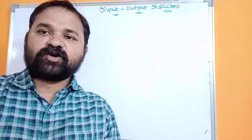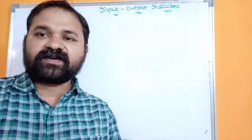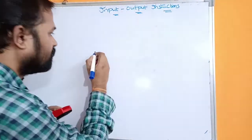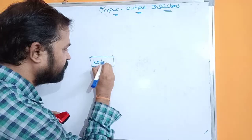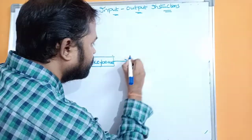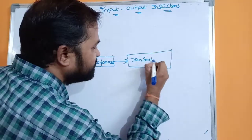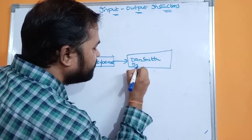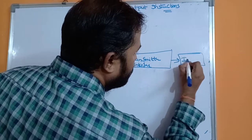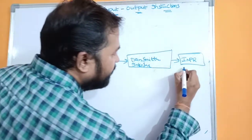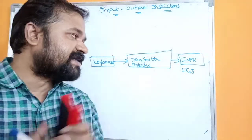In this video we are going to discuss input/output instructions. First, let's see how data is transmitted from input devices to output devices. The most commonly used input device is a keyboard. Whenever we type any character using the keyboard, the transmitter interface transmits that character to a register called INPR — INPR stands for Input Register.